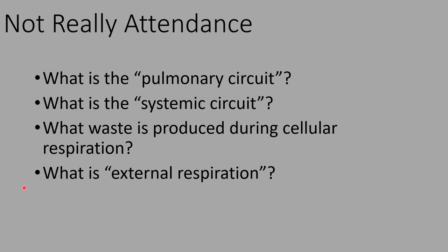Hopefully you've done that, so let's go ahead and see the correct answers. The pulmonary circuit and systemic circuit — we covered these back in cardiovascular, so hopefully this is still pretty fresh. The pulmonary circuit is the pathway that blood follows as it leaves the right side of the heart, travels to the lungs, and then back towards the left side of the heart. The systemic circuit is the path of blood as it leaves the left side of the heart, goes to all the different tissues of the body, and then comes back to the right side of the heart. We will be talking about both of those circuits today.